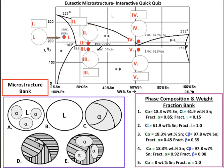Question 4, at the point 190 degrees Celsius and 25% Sn — so at Roman numeral 2, or this red dot right there — what is the microstructure? Your answer would go in this bubble right there, and your choices are A, B, C, D, and E.